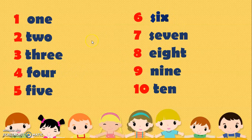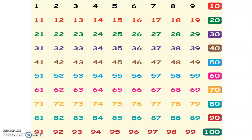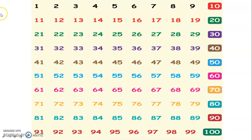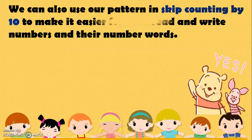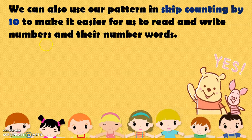To make it easier for us to read and write numbers that are already more than 10, let us remember to keep counting by 10. So we have 10, 20, 30, 40, 50, 60, 70, 80, 90, up to 100. And then when we are already more than 10, we can just use the numbers from 1 to 9 to make 11, 12, 13... up to 19, until we reach 20, and follow the same pattern. We can also use skip counting by 10 to make it easier for us to read and write numbers and their number words.